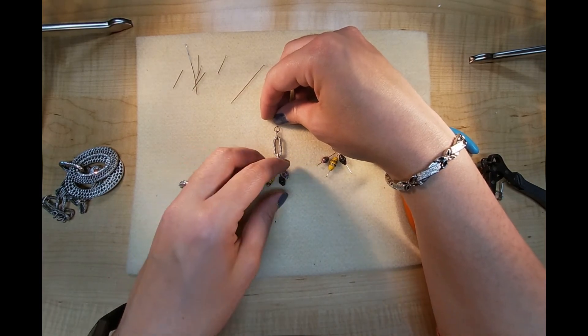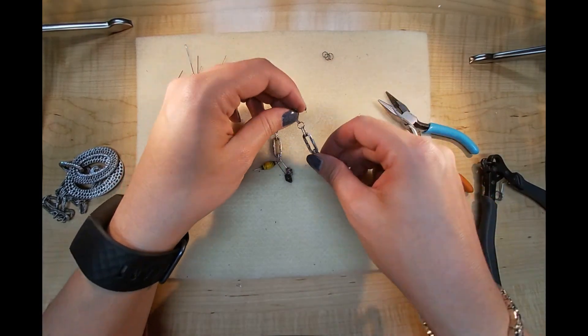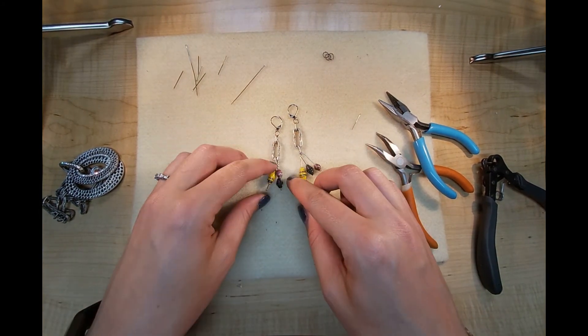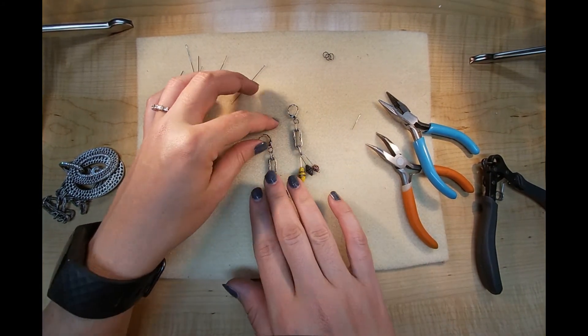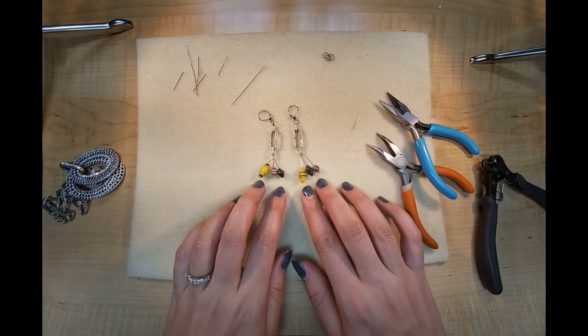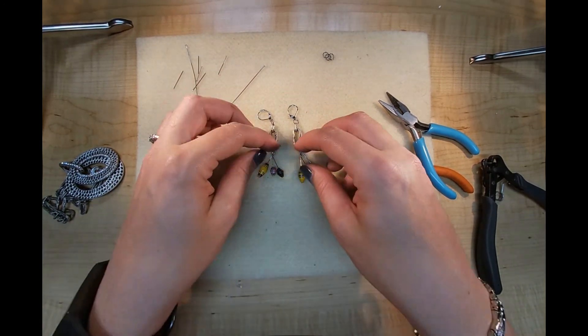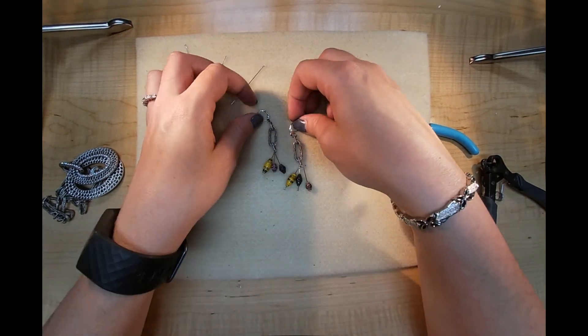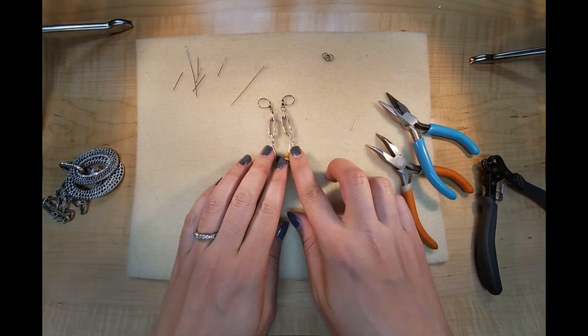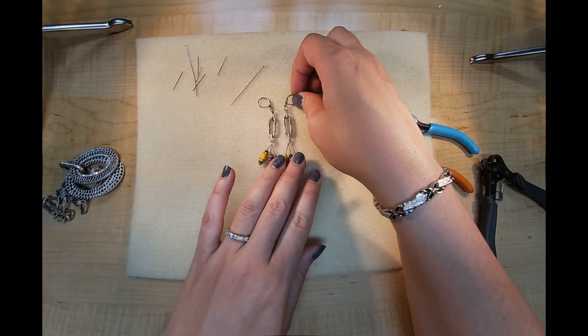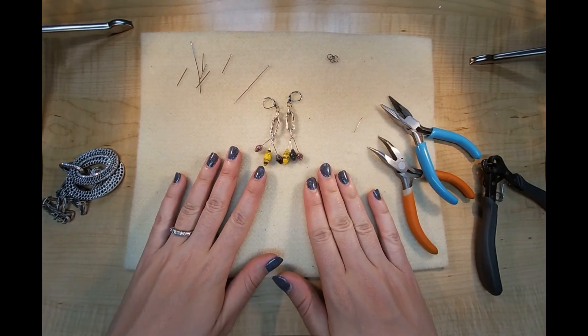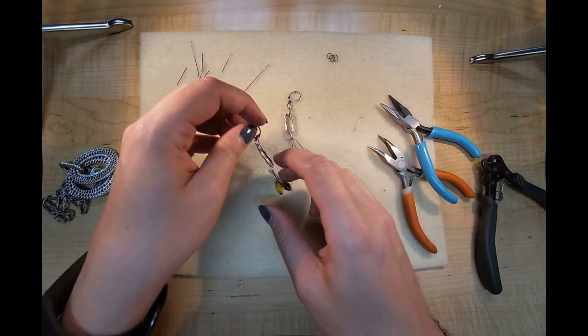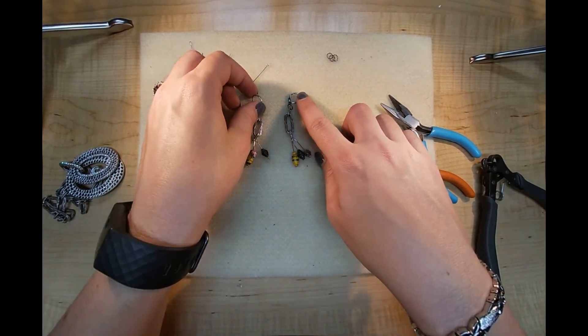Just some fun, funky little earrings that kind of have like this industrial little bit of, they kind of remind me of the radio tubes or fuses or something in these colors. That were off this previous necklace. I think I got these off of. I'm not sure where these paper beads came from, but there we go.